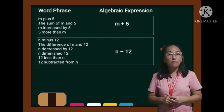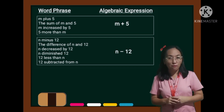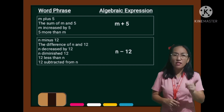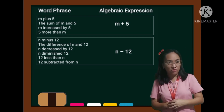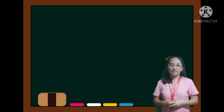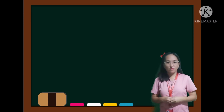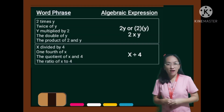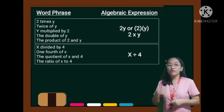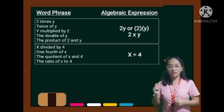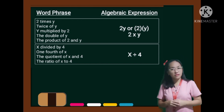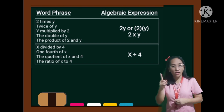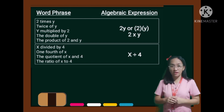Before you proceed to the next example, tell your child that we use letters to represent a number. For the next example, we have used different words related to multiplication, then division as well, and still we translated into one algebraic expression.